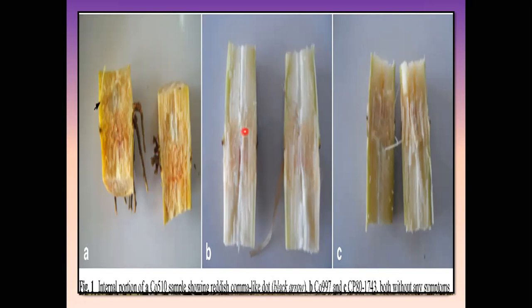The orange-red vascular bundles generally plug the phloem-xylem cells by producing gummy substances. These gummy substances block the phloem cells and stop translocation of water from one place to another. Disease in the phloem usually results in stunted growth, reduced tillering, and thin tillers produced from infected plants with shortened internodal portions. The leaves of infected plants are totally yellow in color. These are the overall symptoms seen externally on the plant and internally in the sugarcane setts.